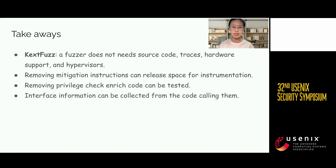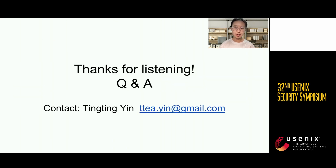That's the overall introduction of KXTFuzz. More details can be found in the paper. As a conclusion, in this work we proposed a fuzzer named KXTFuzz which can fuzz Apple Silicon MacOS kernel extensions. The biggest feature of KXTFuzz is that it does not rely on common supports like source code, hardware, or hypervisors — all it needs is a bootable system. More specifically, we replace pointer authentication code in kernel extensions to do coverage instrumentation, remove entitlement checks to test privileged code, and collect interface information from the wrapper layers. Thanks for listening. My email address is shown on the screen. Any questions are welcome.